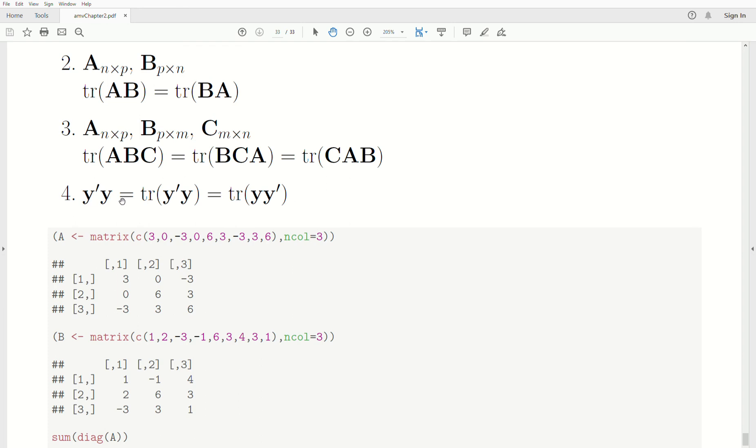The trace, this one property four is, remember these are vectors. So y^T*y, this is a number, it's a scalar. It's a one by one matrix. So the trace is actually just that value. So taking the trace of it doesn't change it. But when you take the trace, then you can move multiplication around.